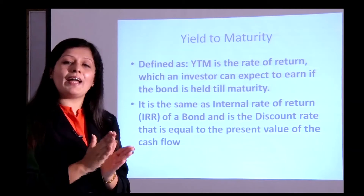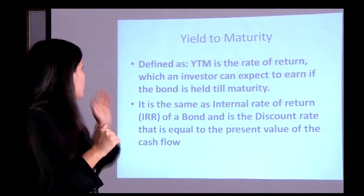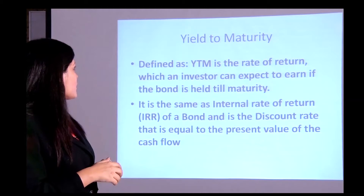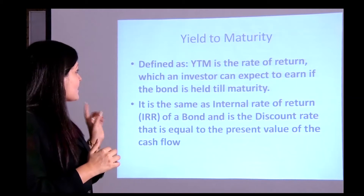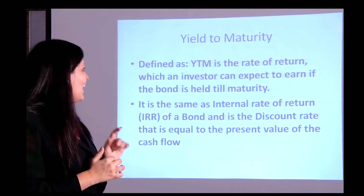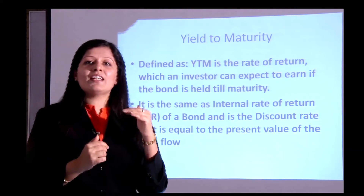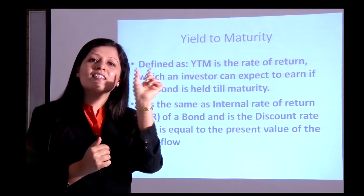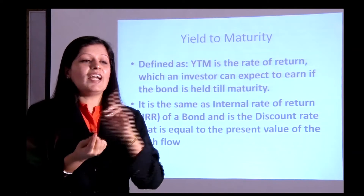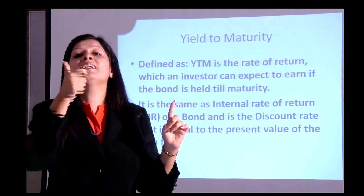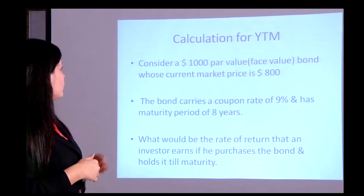Current yield only measures return within a year. But if you hold the bond till maturity, we use Yield to Maturity (YTM). YTM is the rate of return an investor can expect if the bond is held to maturity. It is the same as the internal rate of return of a bond — the discount rate that equates the present value of cash flows to the bond's price. Previously the discount rate was given to find the price; here the price is given and we find the discount rate.